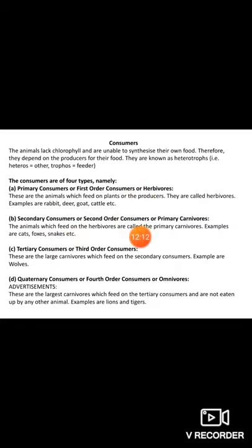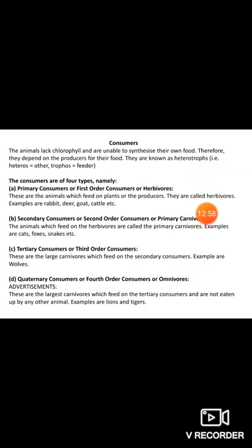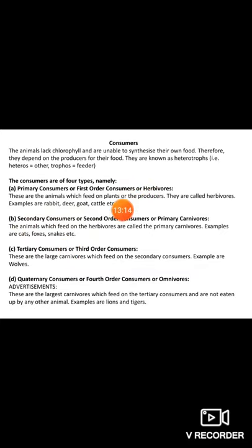Secondary consumers are also called second-order consumers or primary carnivores. Herbivores depend on plant-based foods, while carnivores depend on other living things — specifically the herbivores. Animals which feed on herbivores are called primary carnivores; examples include cats, foxes, and snakes. Tertiary consumers are also called third-order consumers or secondary carnivores. These are large carnivores which feed on secondary consumers like cats, foxes, or snakes — for example, wolves.